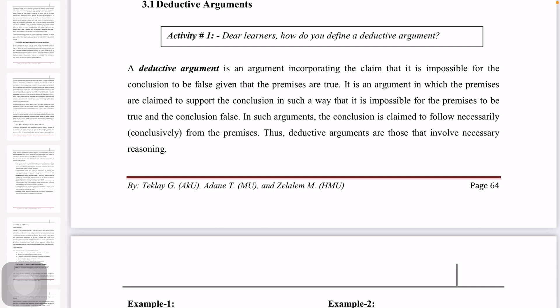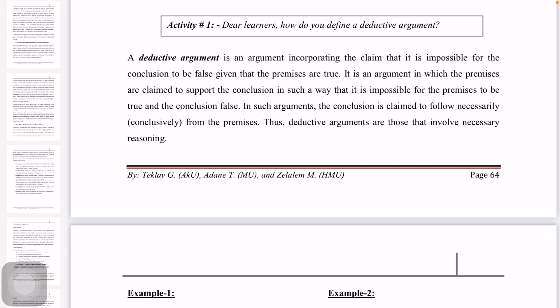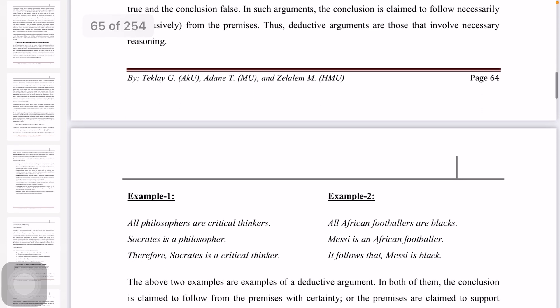In deductive arguments, the conclusion is claimed to follow necessarily and conclusively from the premises. The conclusion follows necessarily from the premises. Thus, deductive arguments are those that involve necessary reasoning.